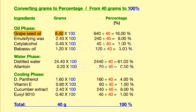As you can see, we have 6.4 grams of grapeseed oil. To convert this to percentage, we multiply 6.4 by 100, which gives us 640. Then we divide 640 by 40, and the answer is 16. So the percentage of grapeseed oil is 16 percent.